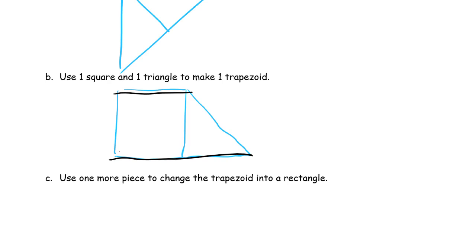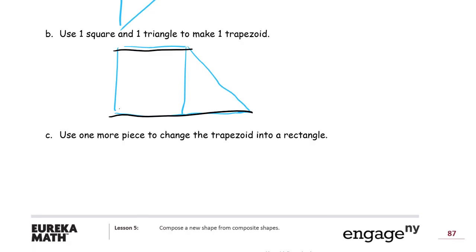And then it says use one more piece to change the trapezoid into a rectangle. So there are two triangles that are the same size, and you're going to need them. You start with this trapezoid, and then you just take the other triangle and make a square out of it with the other triangle. Put those together, and then now you have a rectangle. This whole thing. Four straight sides and four square corners. There's your rectangle.